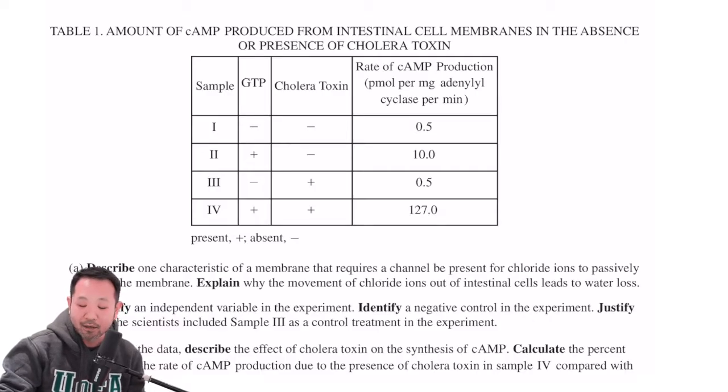this is the table that we're focusing on. As you can see, sample one over here has neither GTP nor cholera toxin. Sample two has both GTP—I'm sorry, sample two has only GTP but no cholera toxin. Sample three has no GTP but cholera toxin. And sample four has both GTP and cholera toxin.